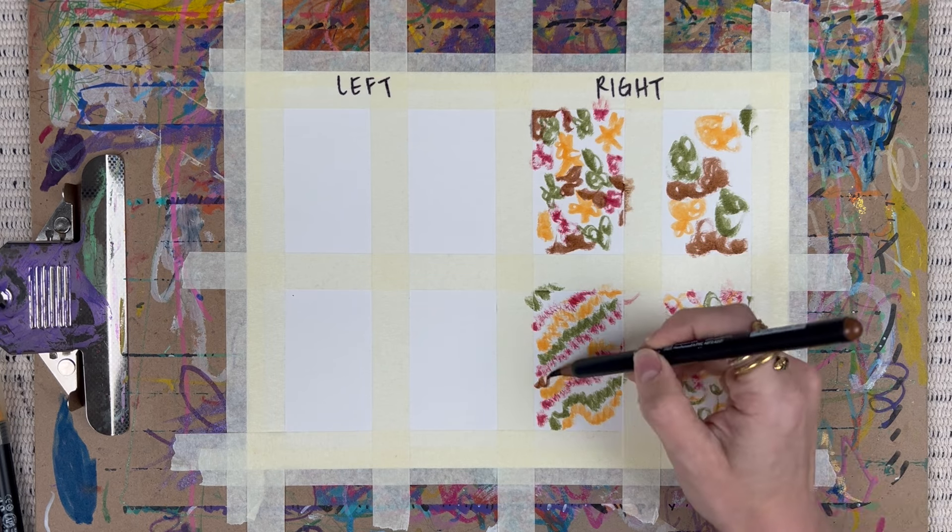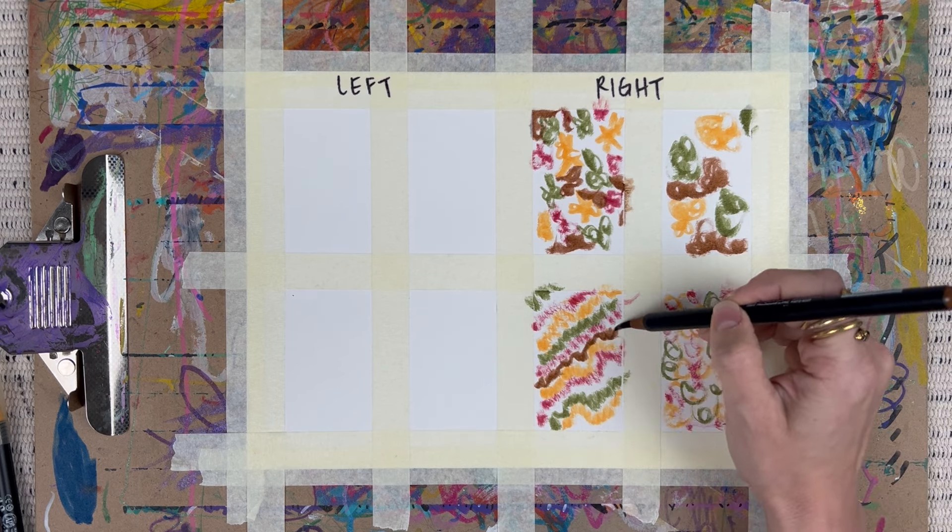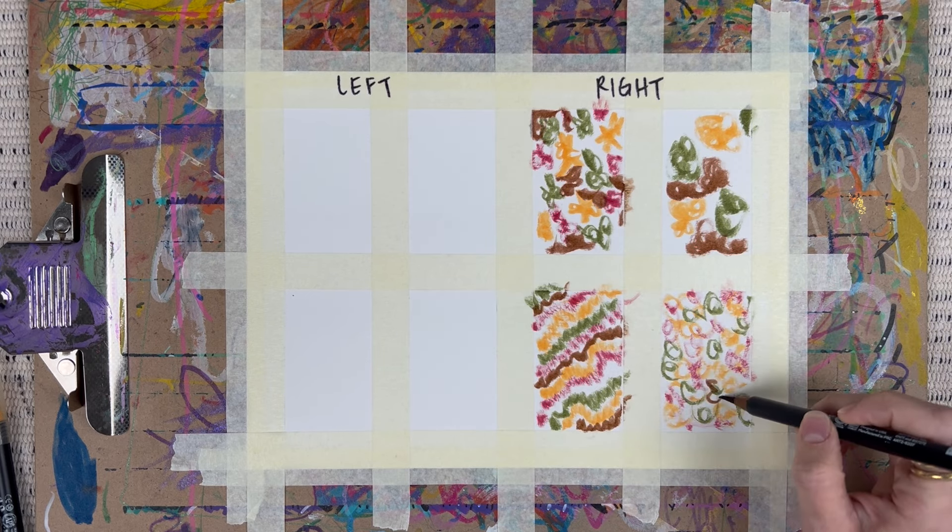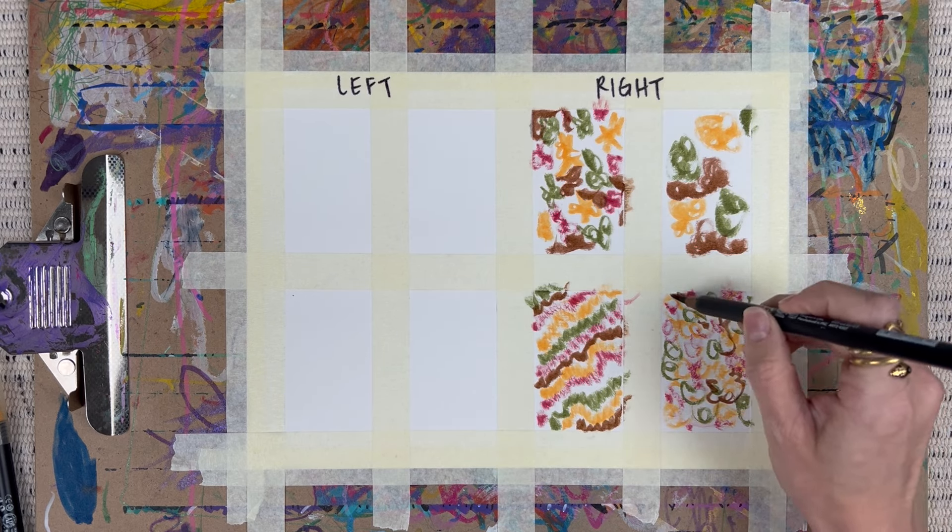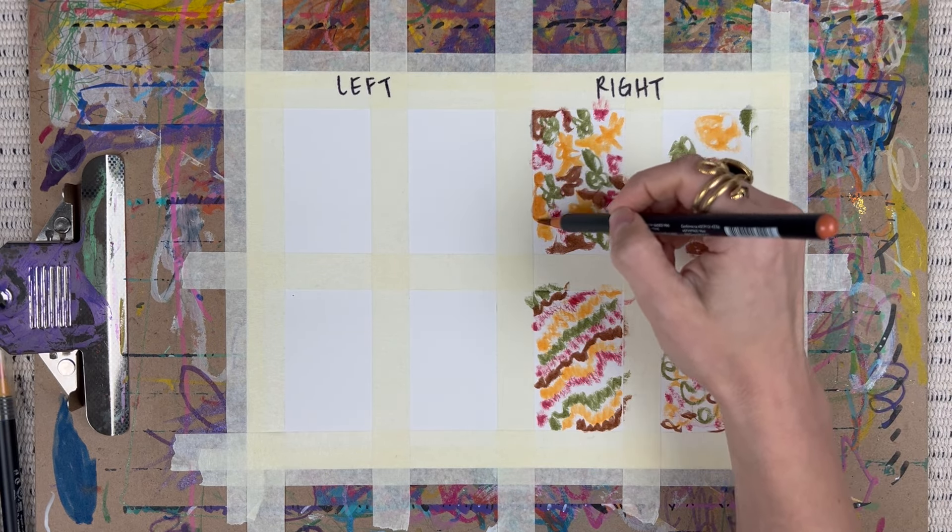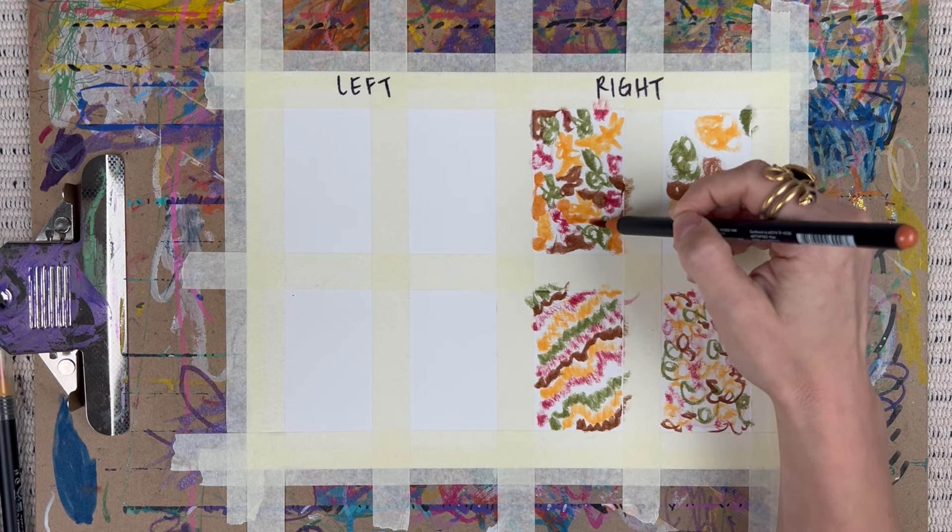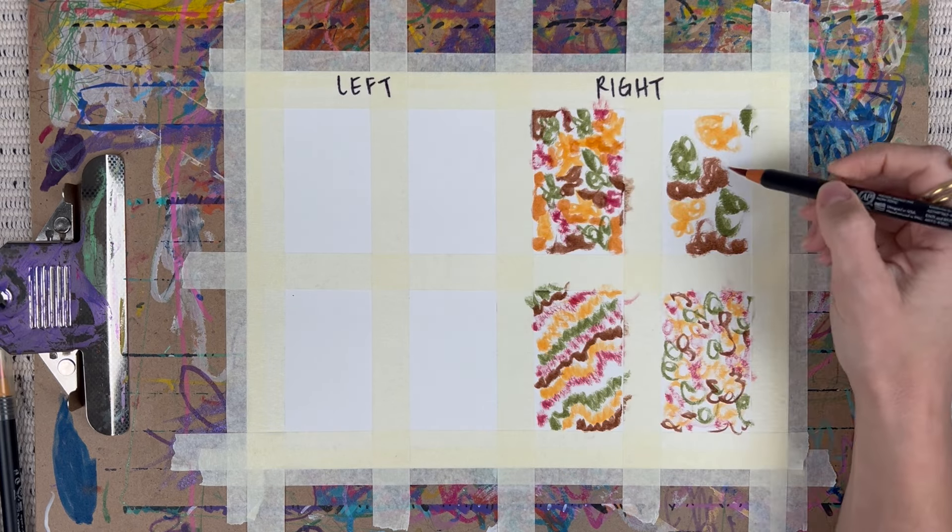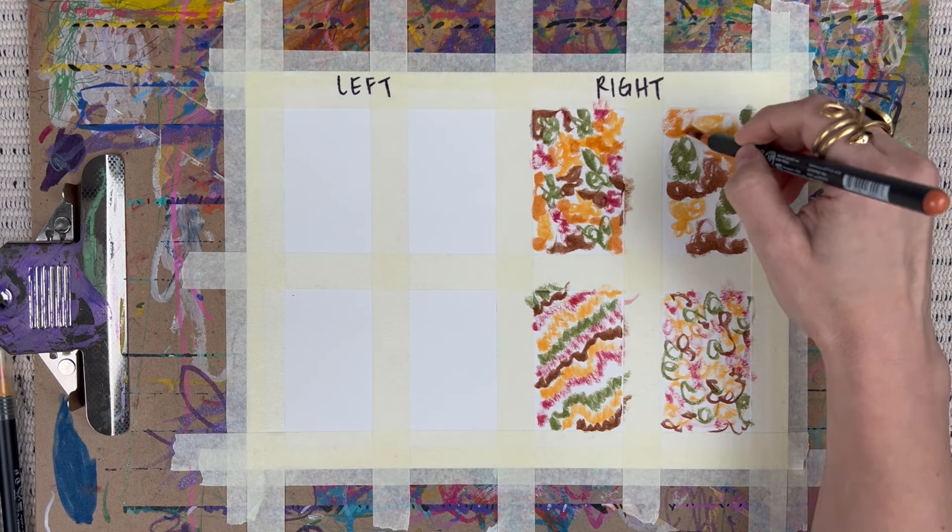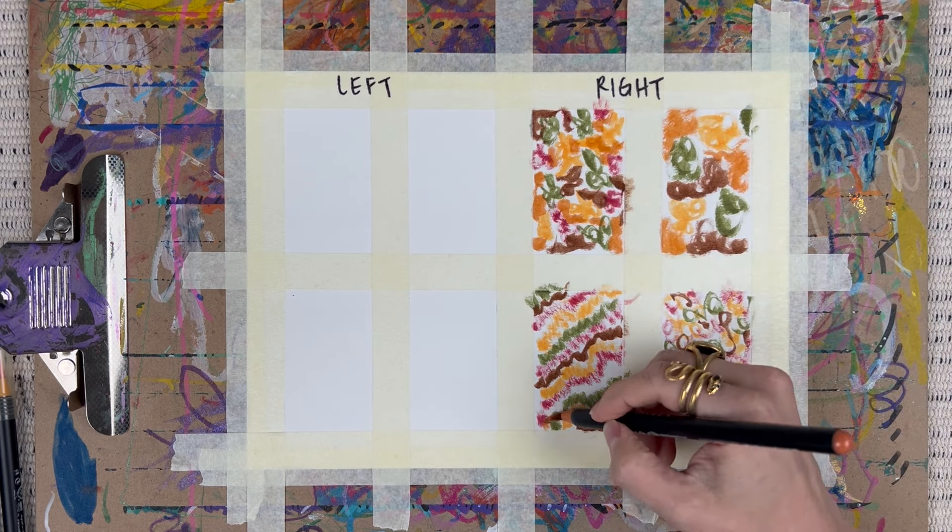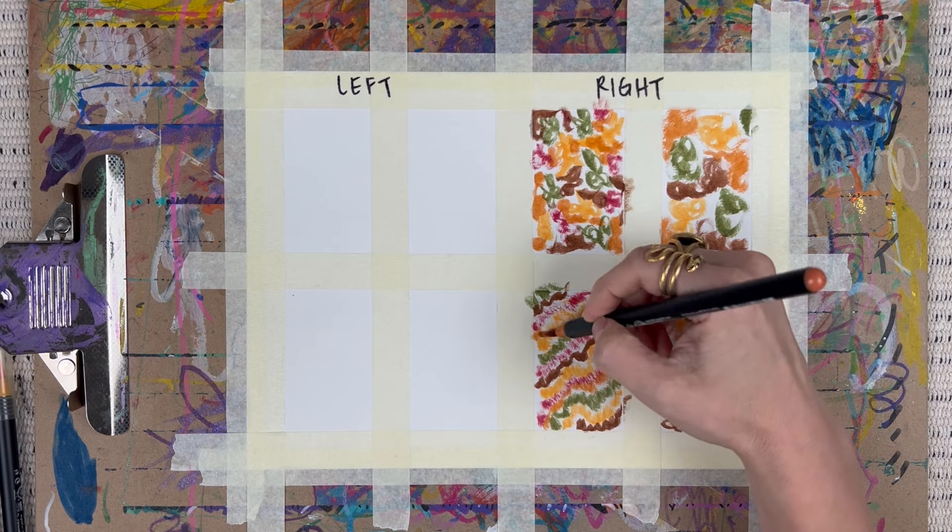So just bring awareness to, oh, isn't that interesting? I'm not being in the process. I'm judging the process. And that's a nice meditation practice to bring awareness back to the present moment and what's happening on the paper instead of thinking about what's happening on the paper. So you want to be part of this process with your senses and with your awareness or with your focus.